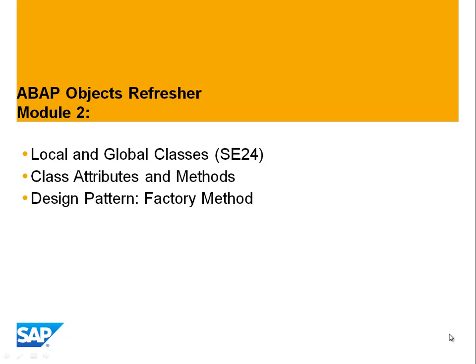Welcome back. We're now on Module 2. We will talk about local and global classes, class attributes and methods, and a design pattern that is very well known and important, the factory method. First of all, local and global classes.